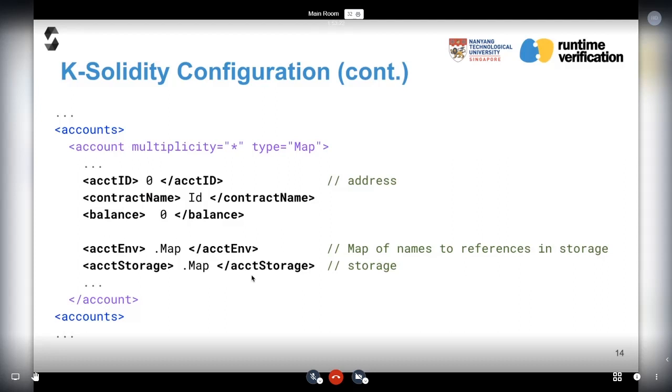If we look into the blue part, you can see we have a cell account in which we store all the contract instances that have been deployed on the blockchain, including its address, contract name, balance, storage, etc.